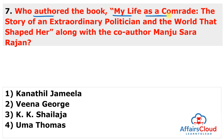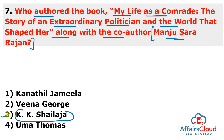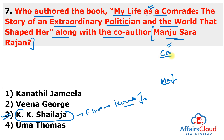Next question: Who co-authored the book 'My Life as a Comrade: The Story of an Extraordinary Politician and the World That Shaped Her' along with co-author Manju Sararajan? This book was co-authored by K.K. Shailaja, former Health Minister of Kerala and currently a member of the Kerala Legislative Assembly from the Mattannur constituency. The book was co-authored by Manju Sararajan, former CEO of Kochi Foundation, and published by Juggernaut Books. The book details Shailaja's life from a small settlement in the Malabar area to a cabinet position in the Kerala government. K.K. Shailaja, popularly known as Shailaja Teacher, is a member of the Communist Party of India (Marxist), or CPI(M).